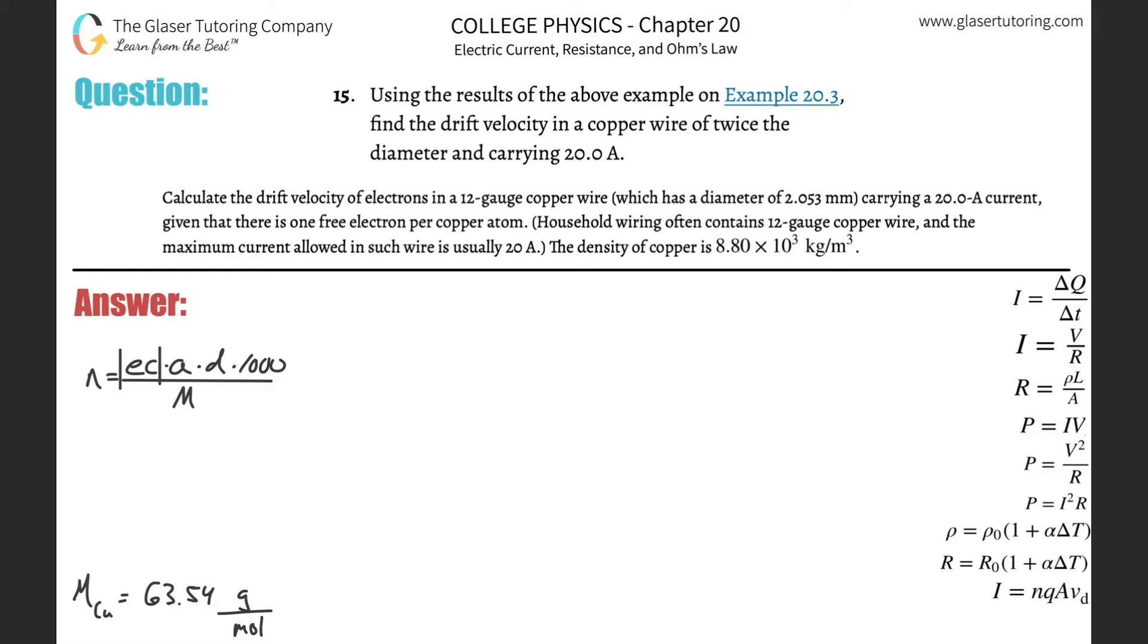Number 15, using the results from the above example on example 20.3, find the drift velocity of a copper wire of twice the diameter and carrying a 20 amp current. So here's the problem. It says calculate drift velocity. This is example 20.3. 12 gauge copper wire. Here's the diameter. Here's the current.